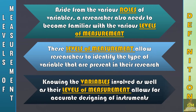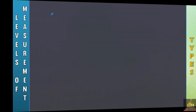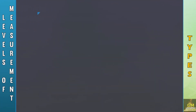This is important because knowing the variables involved as well as their levels of measurement allows for accurate designing of instruments. Now at this point, we're going to talk about the different levels of measurement. We have four levels of measurement.